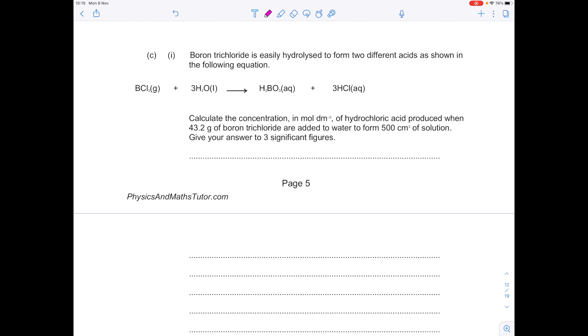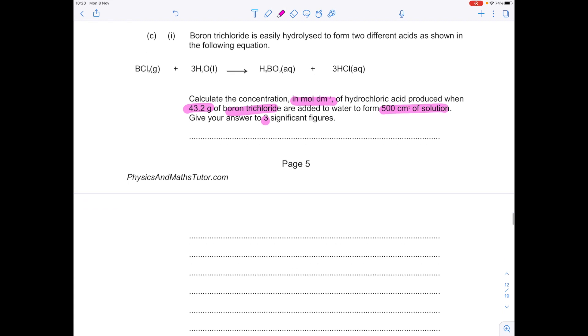Boron trichloride is easily hydrolyzed to form two different acids. Calculate the concentration in mol dm⁻³ produced when 43.2 grams of boron trichloride are added to water to form 500 cm³ of solution. Give your answer to three significant figures. So the very first thing we want to do is find the number of moles of boron trichloride, which is that mass divided by its MR using your periodic table.